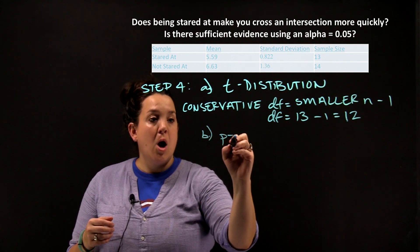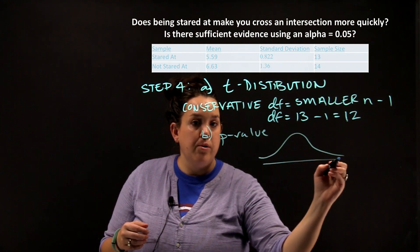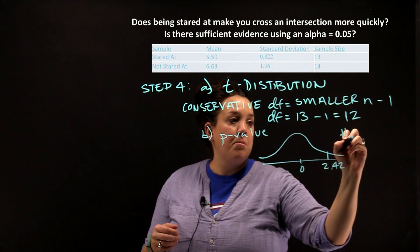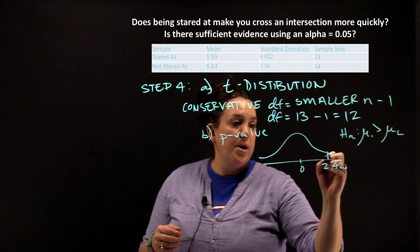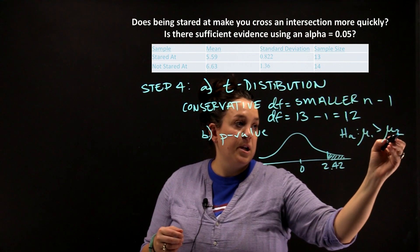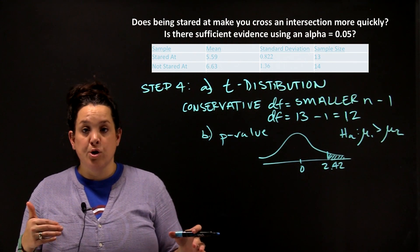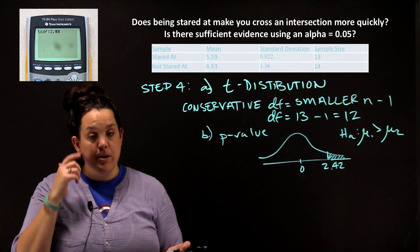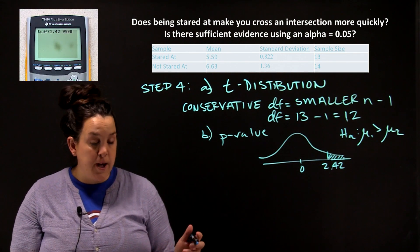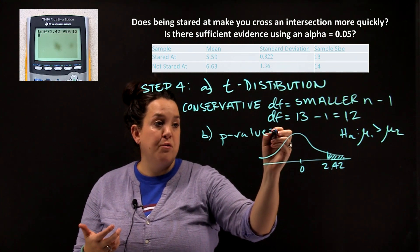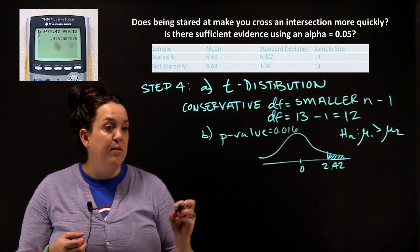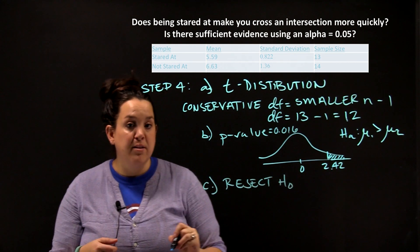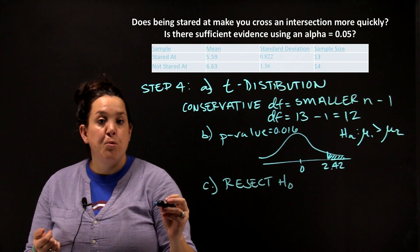Next, we find our p-value by drawing the curve and placing our test statistic of 2.42 on it. Since our alternative was mu1 greater than mu2, we're interested in the area above the test statistic. Using the calculator's tCDF function, we go from 2.42 up to positive infinity with 12 degrees of freedom — telling the calculator which curve we're dealing with. That results in a p-value of 0.016. Because that p-value is less than our level of significance alpha of 0.05, we make the decision to reject the null hypothesis.